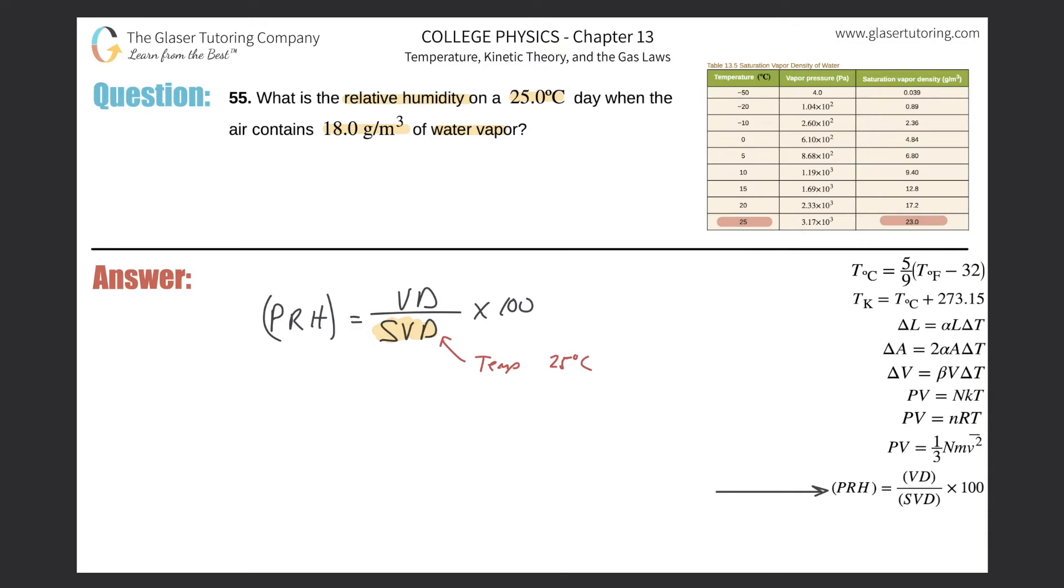They don't have any units. So now I can just plug in my values. So the percent relative humidity is going to be equal to the vapor density found in the air. I mean, and it tells us this, right? Remember, it sounds confusing. Vapor density, what the hell? What is that?